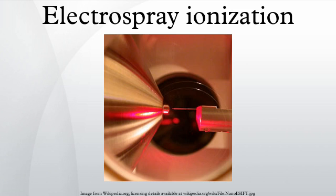Electrospray ionization is a technique used in mass spectrometry to produce ions using an electrospray in which a high voltage is applied to a liquid to create an aerosol. It is especially useful in producing ions from macromolecules because it overcomes the propensity of these molecules to fragment when ionized.